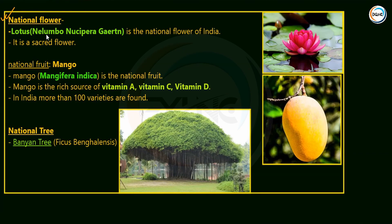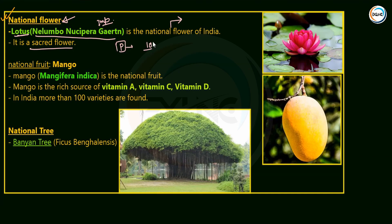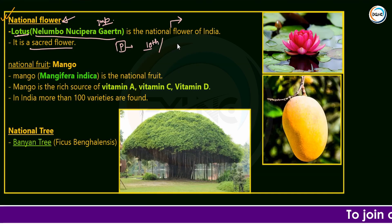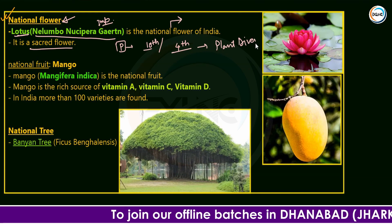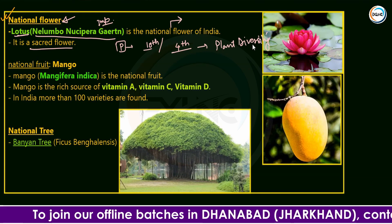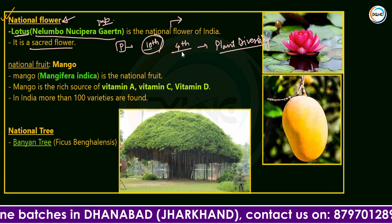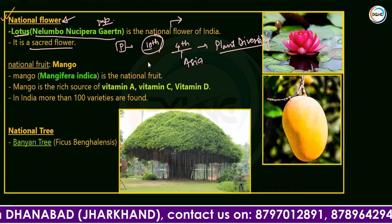The National Flower is the lotus. Lotus is a sacred flower and its scientific name is Nelumbo nucifera Gaertn. According to plant diversity in India, India ranks 10th in the world and 4th in Asia with respect to plant diversity — this is an important fact to keep in mind.